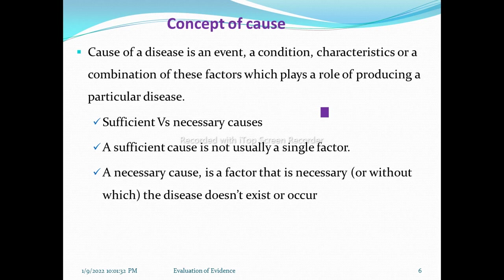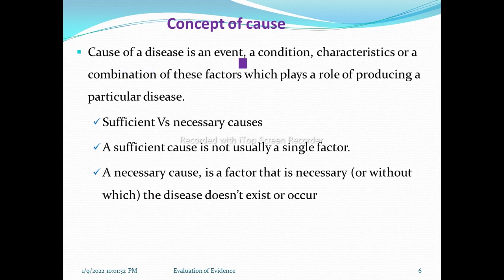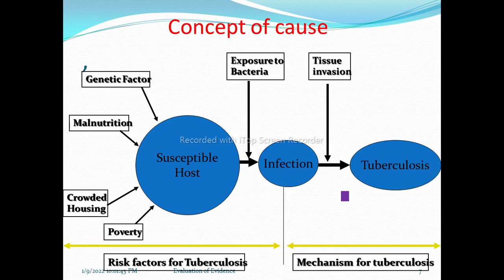Judgment of causality means discovering the cause of disease — judging whether an association between an exposure and disease is causal or not. The concept of cause refers to an event, condition, characteristic, or combination of factors which plays a role in producing a particular disease. There are different types of causes: sufficient and necessary. A sufficient cause is not usually a single factor; a necessary cause is one without which the disease does not occur.